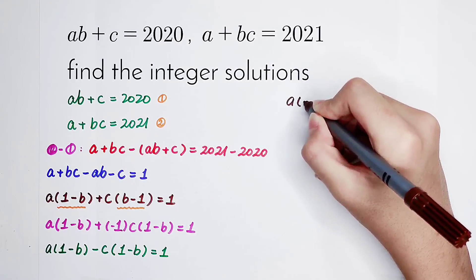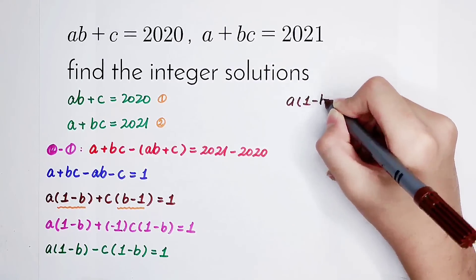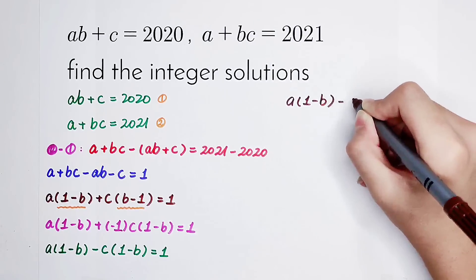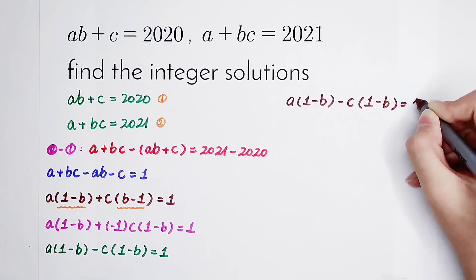And then 1 minus B times A minus C is equal to 1.